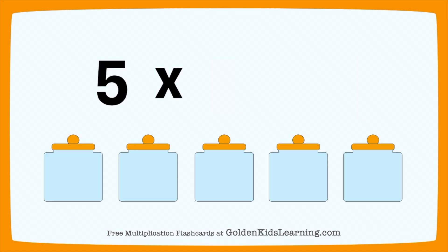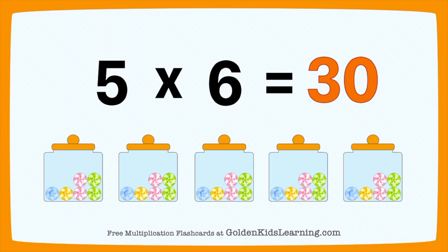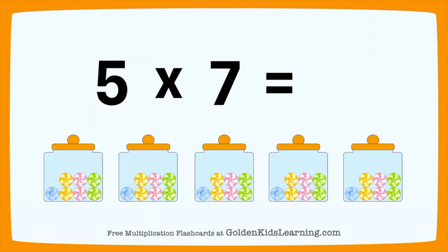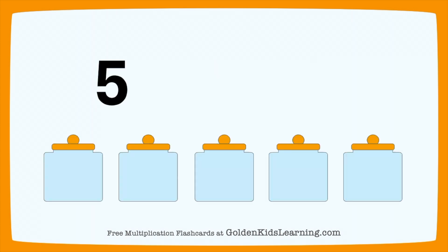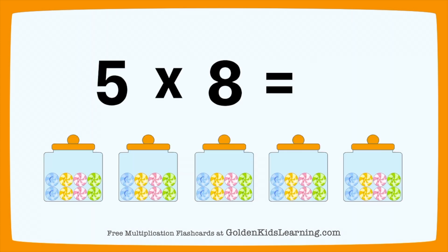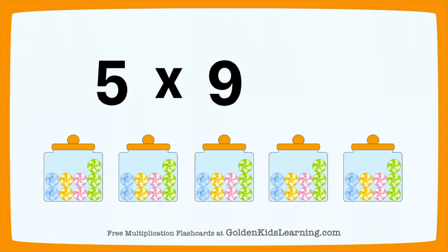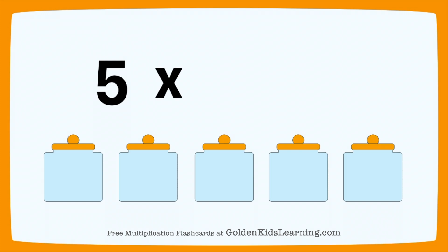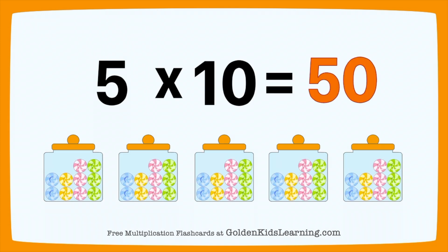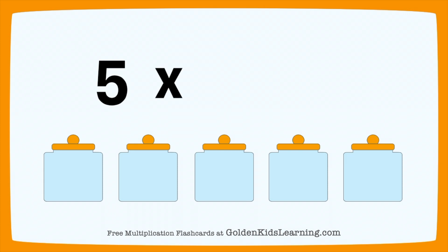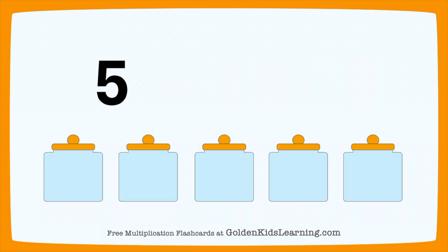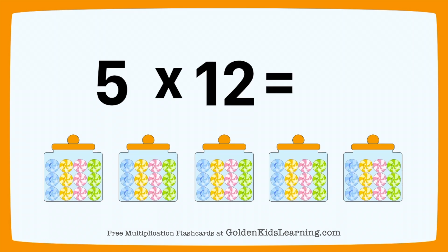5 times 6 equals 30. 5 times 7 equals 35. 5 times 8 equals 40. 5 times 9 equals 45. 5 times 10 equals 50. 5 times 11 equals 55. 5 times 12 equals 60.